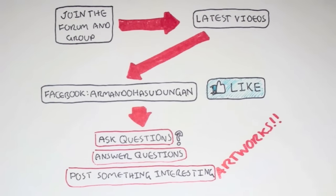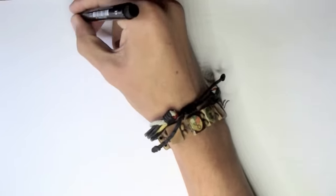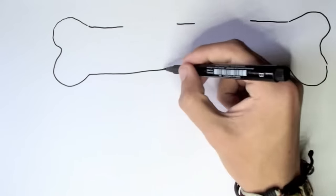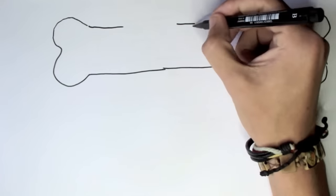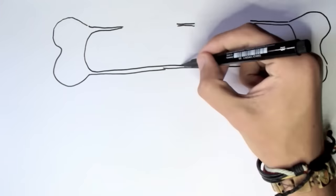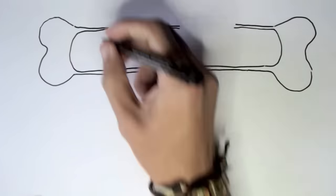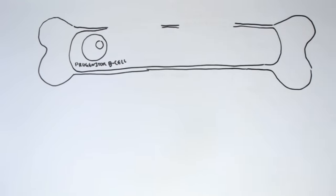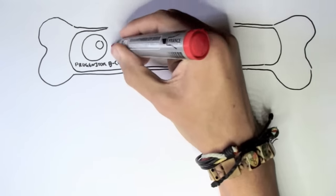In this video, we are talking about somatic mutation, hypermutation, and class switching in B cells. To get an appreciation of hypermutation and class switching, let's begin from the very beginning in the bone marrow.